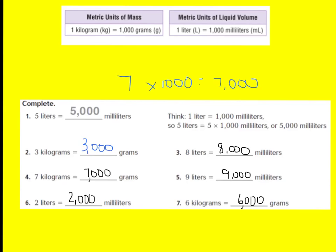For number five, 9 liters is 9,000 milliliters. For number six, 2 liters equals 2,000 milliliters. And number seven, 6 kilograms equals 6,000 grams. I hope our answers matched. Let's move on.